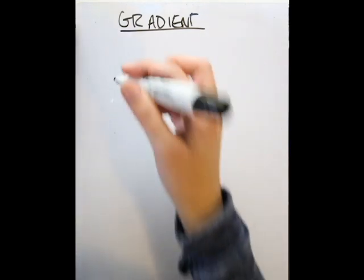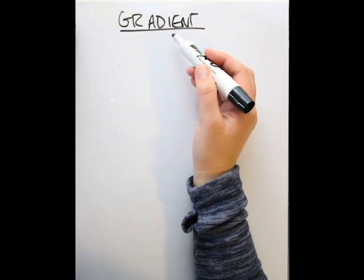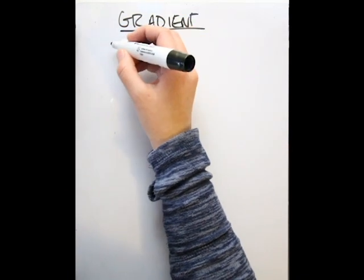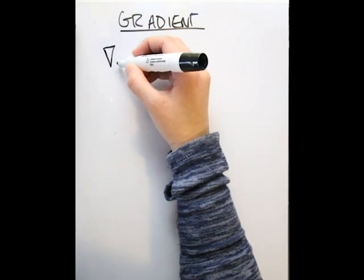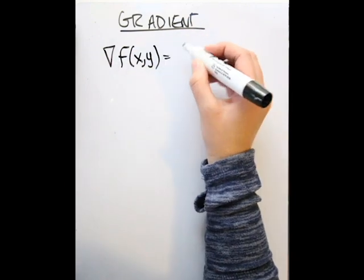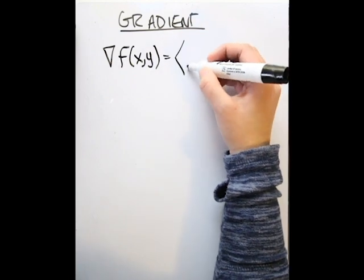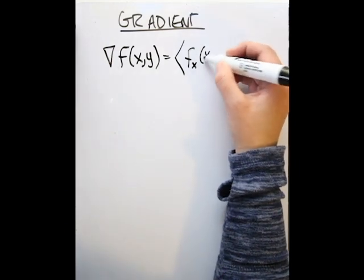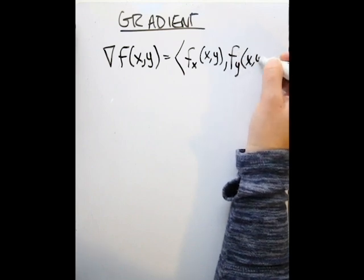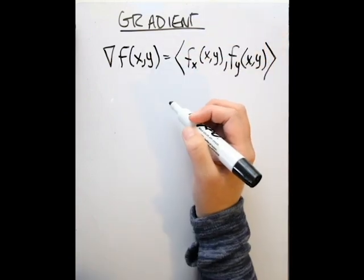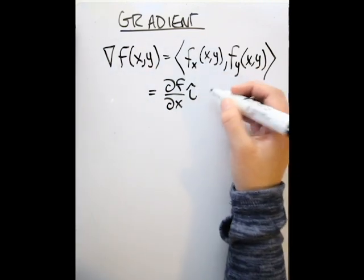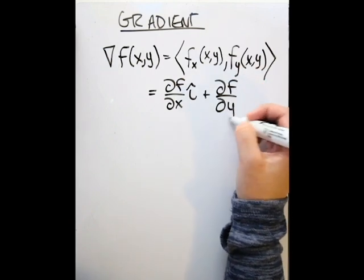Now we look at the gradient. The vector part of the directional derivative has a specific name — it's the gradient, and it's important in many calculations. The gradient of f, written using the del (nabla) operator, at (x, y) is: the partial derivative of F with respect to x at (x, y), and the partial derivative of F with respect to y at (x, y). We can also write this as (∂f/∂x)i + (∂f/∂y)j.